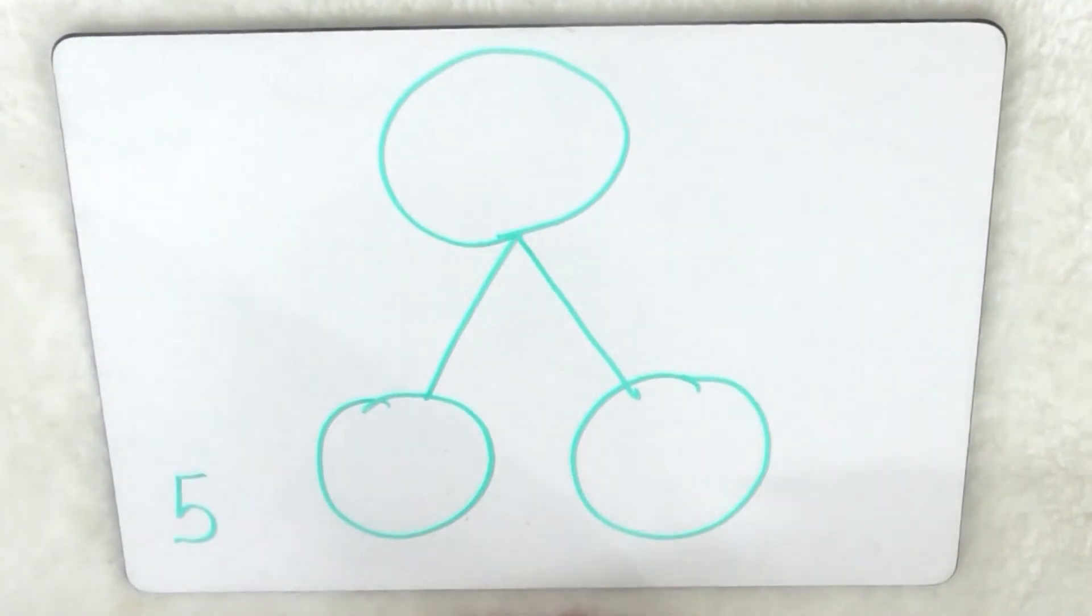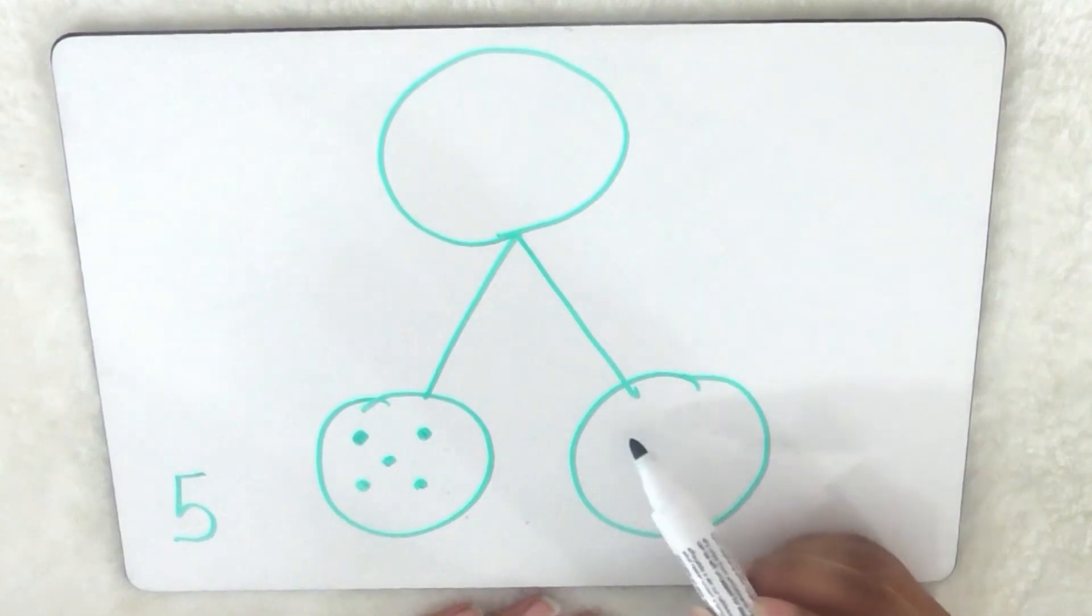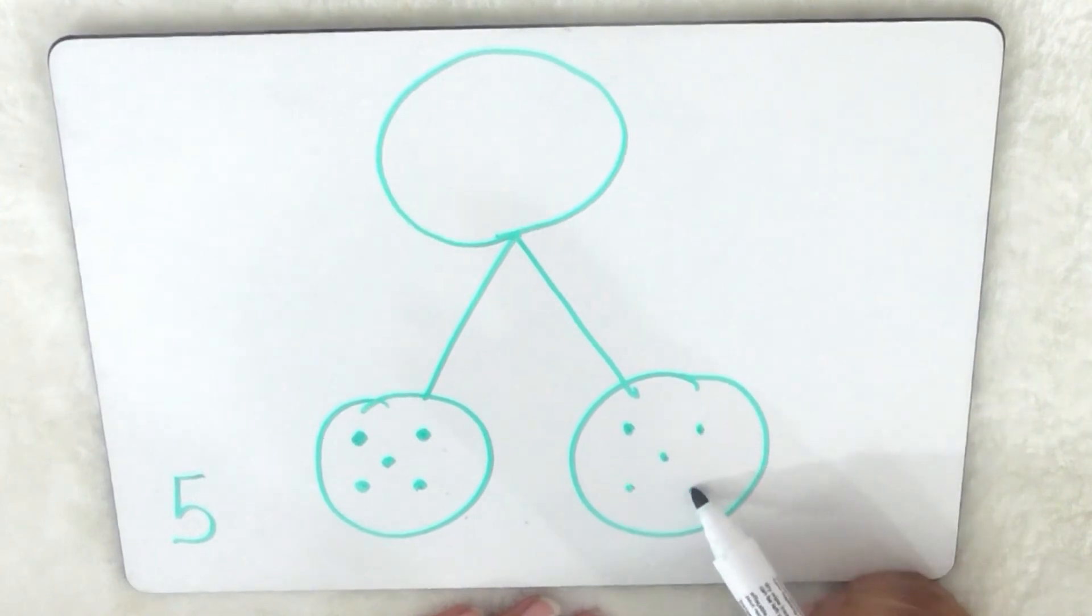So because I'm doubling five, I need to put five here, one, two, three, four, five. And then I also need to put five here, one, two, three, four, five.